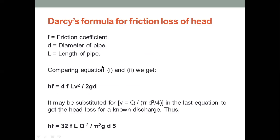When we compare equation 1 and 2, we get that HF equals 4FLV squared by 2GD. Here, L is the length of the pipe, D is the diameter of the pipe, F is the friction coefficient, or that is called Darcy friction factor. This equation HF equals 4FLV squared by 2GD is called the Darcy-Weisbach equation.